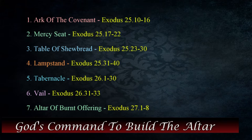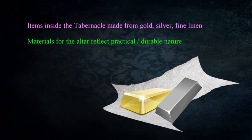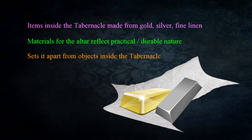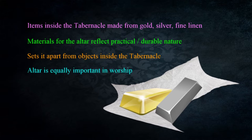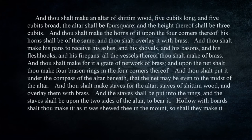As we look at the materials from which the altar was made, we see a striking difference between the altar and the objects studied so far. Items inside the tabernacle were fabricated from gold, silver, and fine linen. Now in the altar we see a more practical and durable nature that sets it apart, though it is equally important in the worship and work of the priests and Levites.